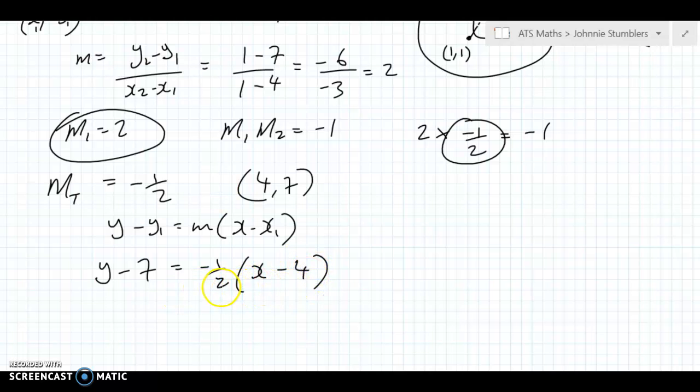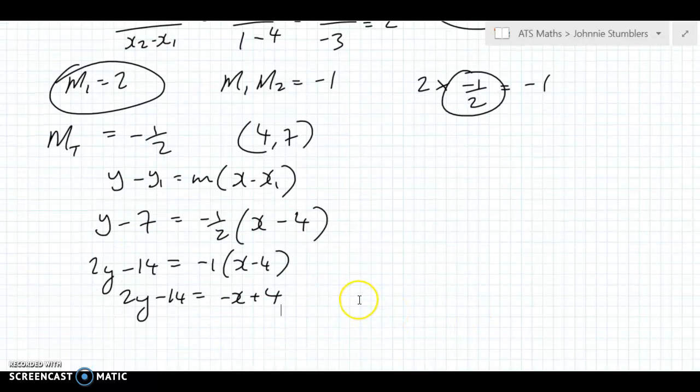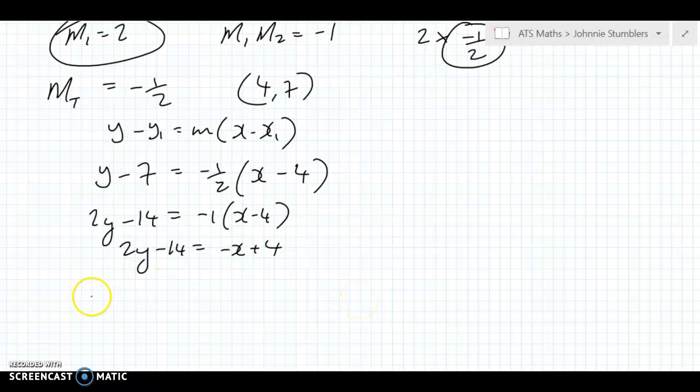So let's tidy that up a bit. So you have 2y minus 14. Multiplying across by 2 gives us minus 1 outside of x minus 4. And that's going to be 2y minus 14 equals minus x plus 4. And after that, you can have 2y plus x, bring over the minus 4. And that gives us minus 18 equals 0.